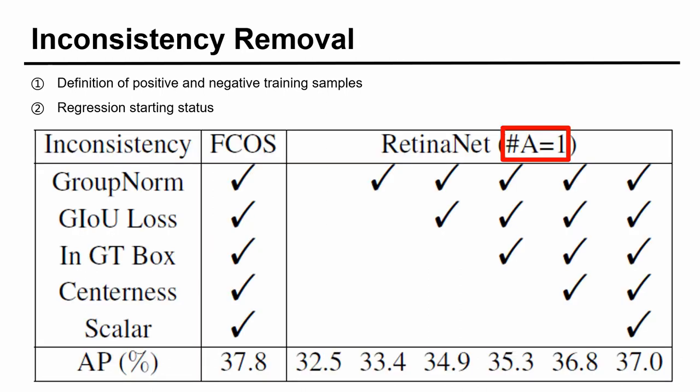Firstly, we set the anchor number per location in RetinaNet as one to eliminate the last difference and focus on the first two differences. The last difference will be discussed later.